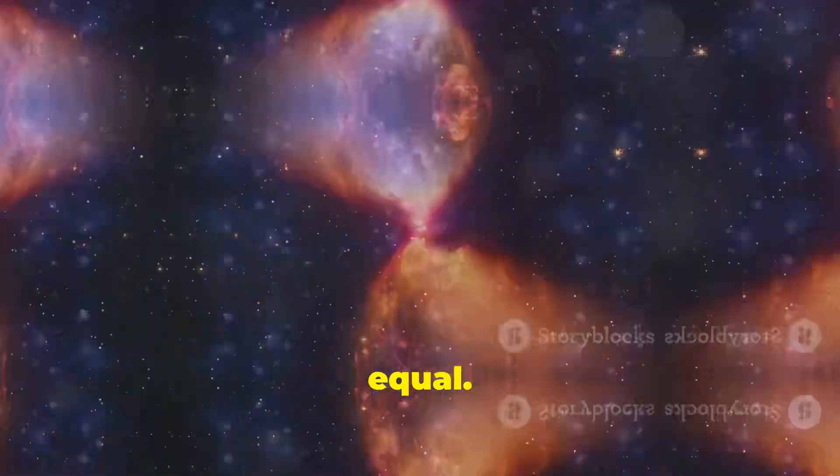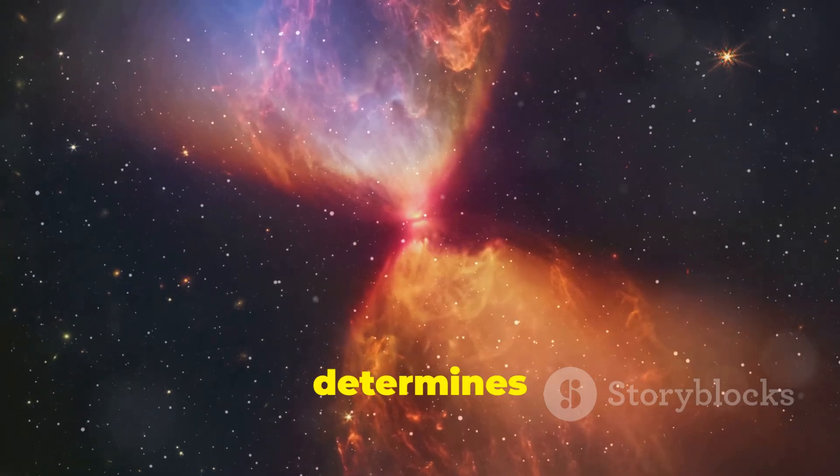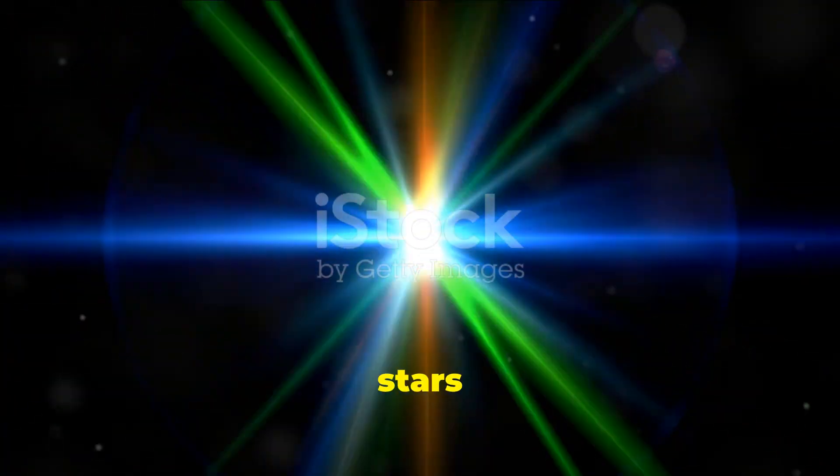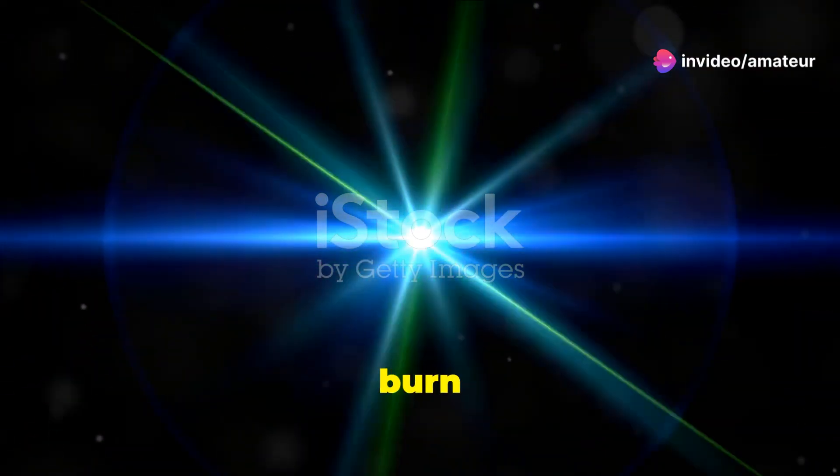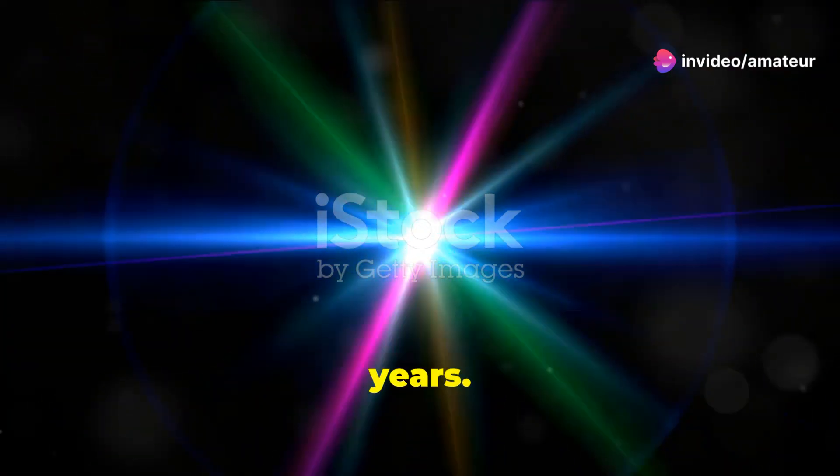But not all stars are created equal. The initial mass of the protostar determines its fate. Massive stars burn brightly but live shorter lives, while smaller stars like our sun burn more steadily and can last billions of years.